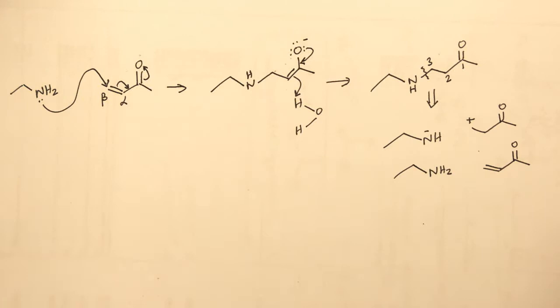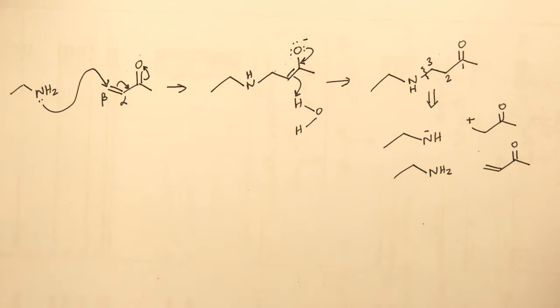And in a 1, 3 disconnection, we can disconnect to a Michael acceptor and a nucleophile. Let's look at an application of this.